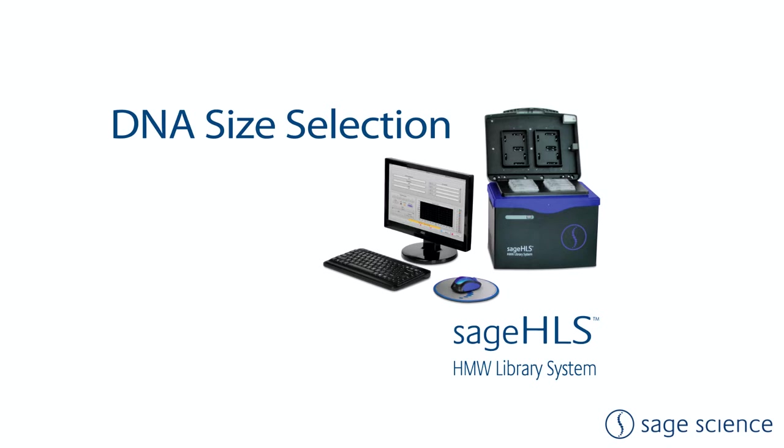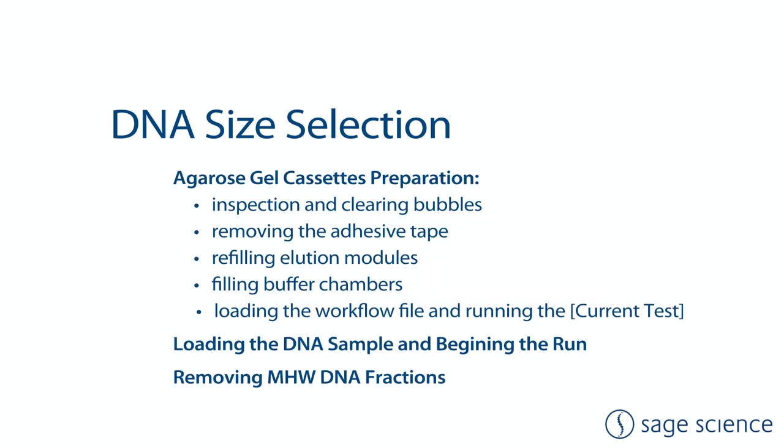However, the collection parameters may be adjusted for other size fractionation that can be useful for other applications. To achieve best results, the most important aspect of the system is to use best practices in the manipulation and use of the Agarose gel cassette. This video will demonstrate the necessary details in this regard and then provide brief instructions for running the size selection and removing the size fractions.